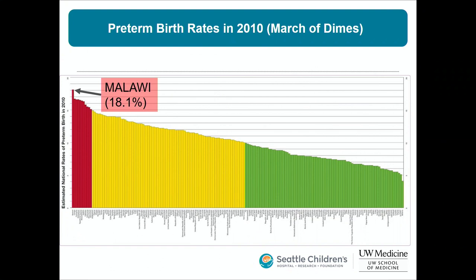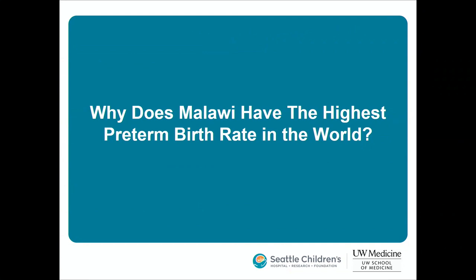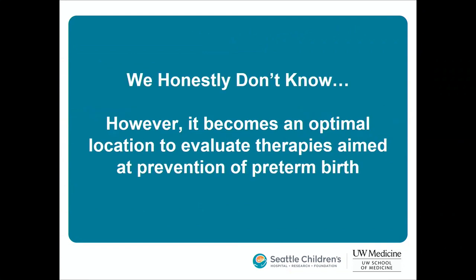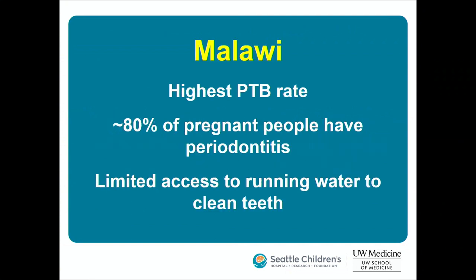March of Dimes data from 2010 showed an 18% preterm birth rate in Malawi, with some publications showing up to 29%. The US was 54th at about 12%, now down to about 10%. Neighboring countries like Zambia, Mozambique, and Tanzania don't have as high a rate as Malawi — we don't know exactly why — but it makes it an optimal location to evaluate therapies aimed at preventing preterm birth.